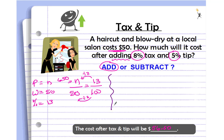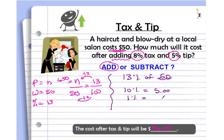Now let's try it using percent shortcuts. I need 13% of $50. Break it down: 10% of $50 is $5 by moving the decimal over one place. Now I need 3%: find 1% by moving the decimal two places — that's 50 cents. Then 3 times 50 cents is $1.50. Add the two together: $5 plus $1.50 is $6.50, which is the same answer. And that's all there is to it. Nice job, Bobcats.